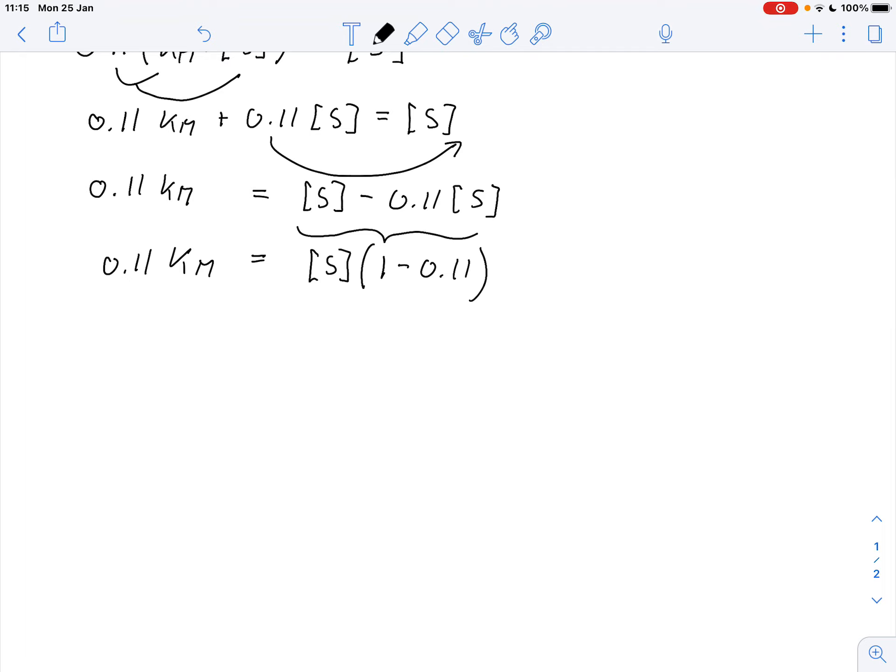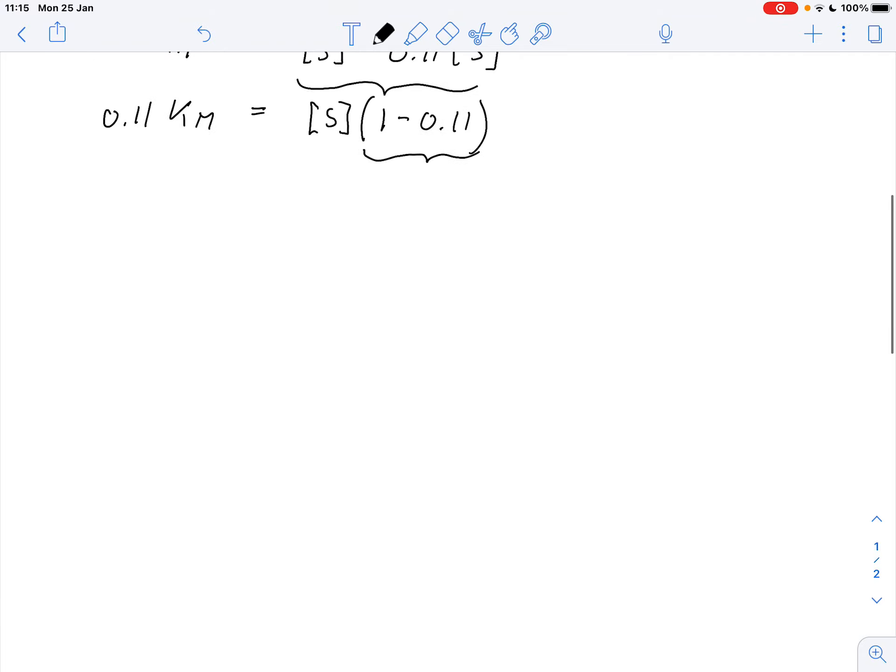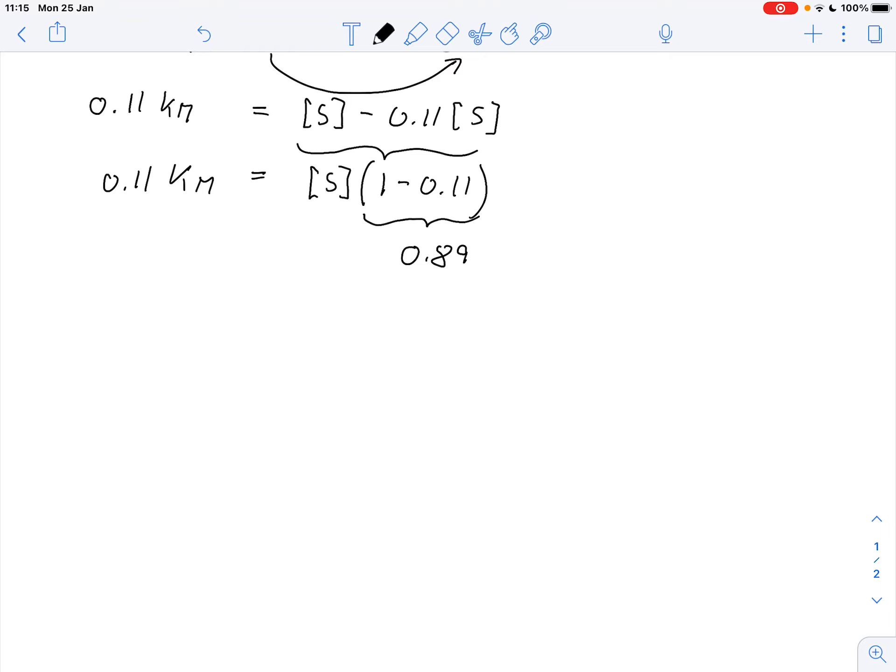So what I can do now is calculate that 1 minus 0.11, that gives me 0.89. So 0.89 times S equals 0.11 Km. So all I need to do is divide both sides of the equation by 0.11. And I get Km equals 0.89 over 0.11 times the substrate concentration.